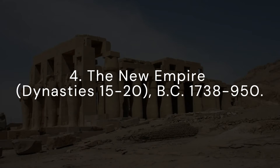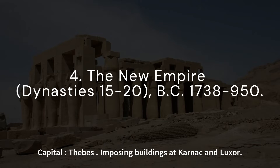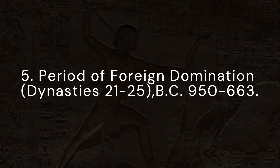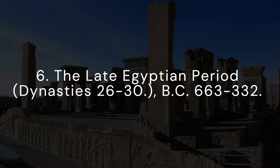4. The new empire, dynasties 15–20, 1738–950 BC. Capital: Thebes. Many imposing buildings were erected at Karnak and Luxor. 5. Period of foreign domination, dynasties 21–25, 950–663 BC. 6. The late Egyptian period, dynasties 26–30, 663–332 BC. The Persian domination.